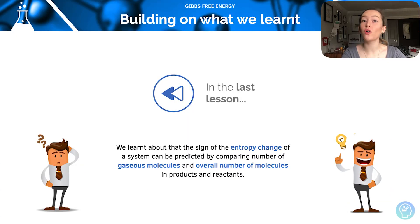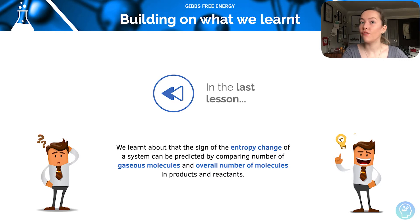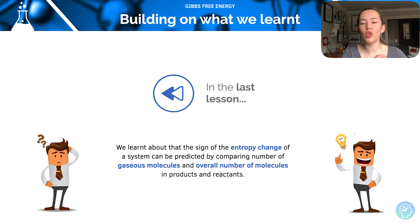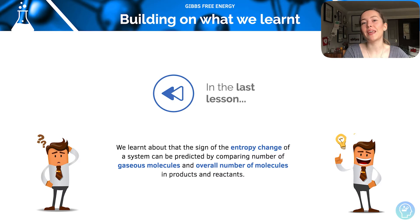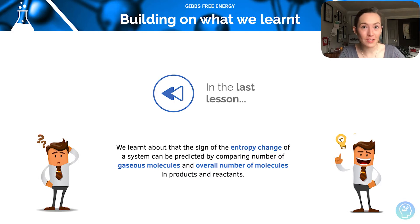Hi and welcome to this lesson on Gibbs free energy. In the last lesson we had a look at inferring entropy changes from our equations. We can predict by comparing the number of gaseous molecules and the overall number of molecules between the reactants and the products. Here we are going to look at taking entropy and enthalpy together and calculating something called the change of Gibbs free energy, which tells us whether a reaction is feasible or not.